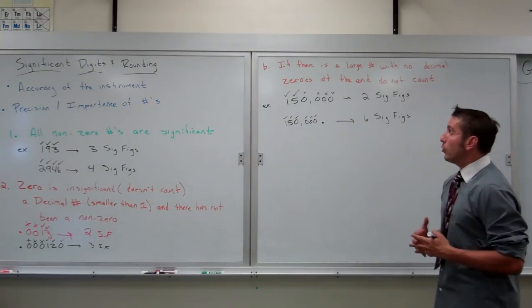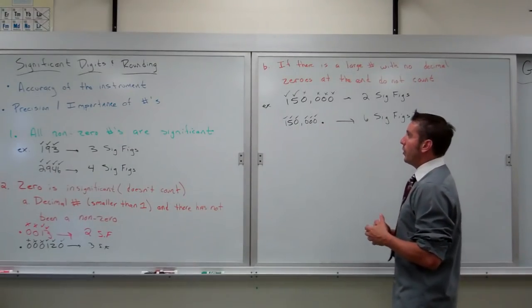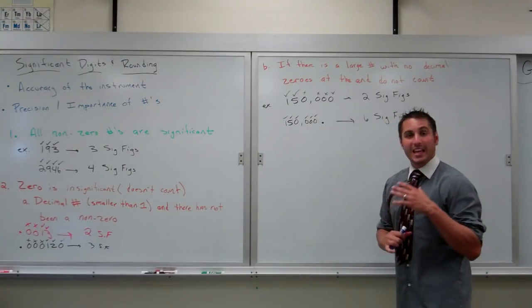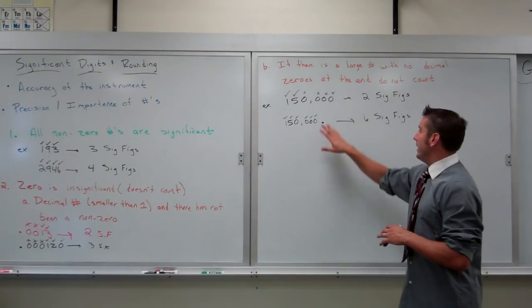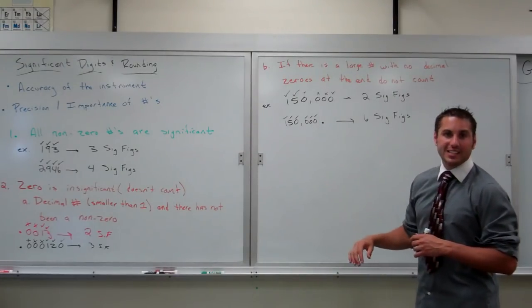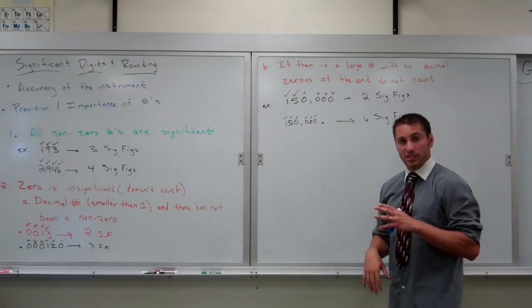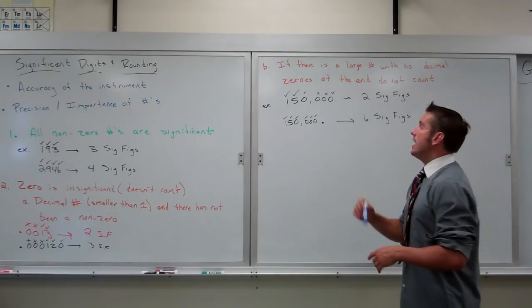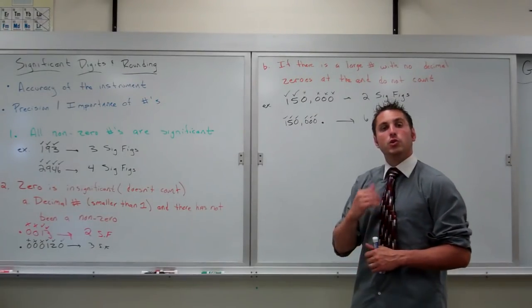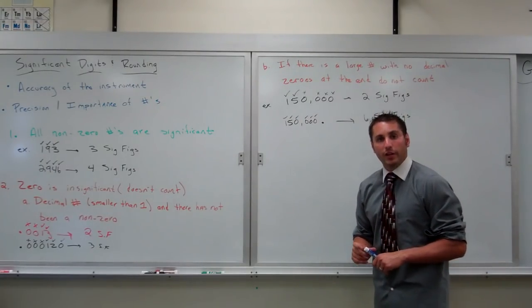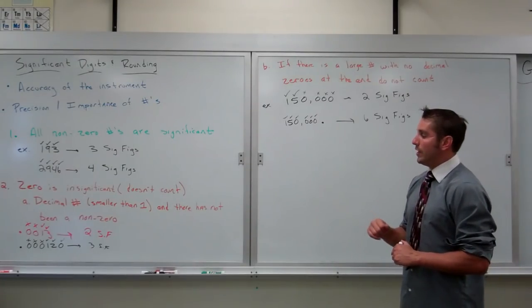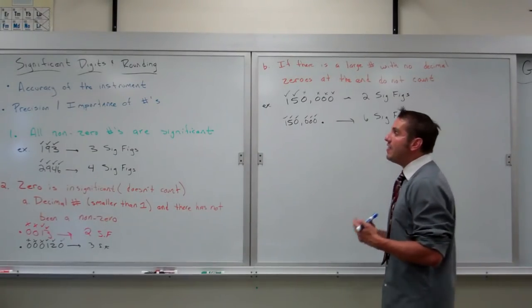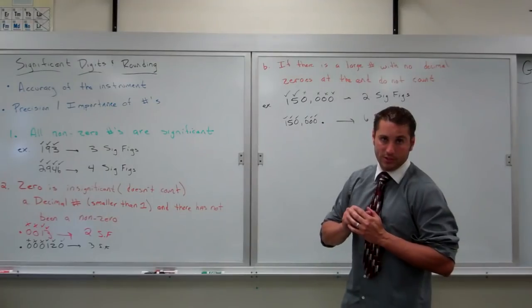A general rule for helping to remember what's going on with zeros: if it's a number bigger than one and it has a decimal, every number counts — zeros and non-zeros. If it's a number less than one, you don't start counting significant digits until you hit the first non-zero, and then everything after that counts.